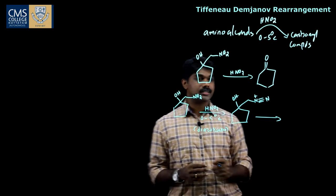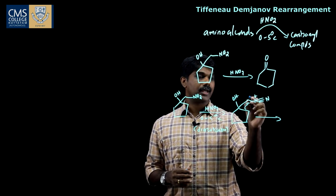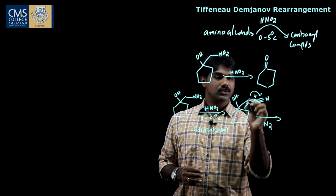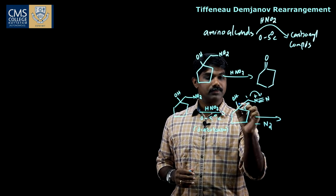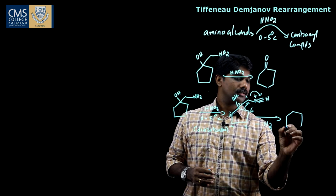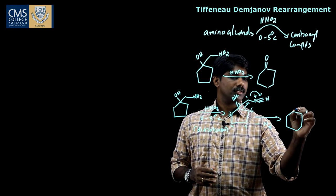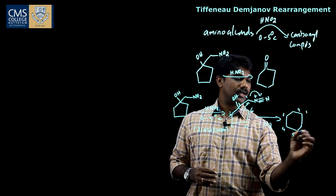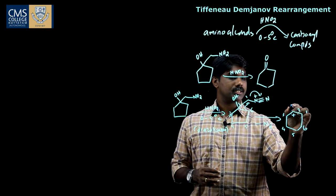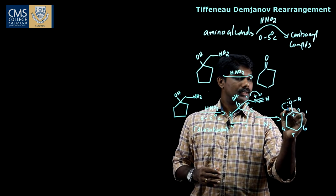After the diazotization reaction, this carbon-carbon bond shifts to this carbon and nitrogen gas gets eliminated — minus N2. We get a new six-membered ring: one, two, three, four, five, six. We have a positive charge on the second position, and there we have an OH group.